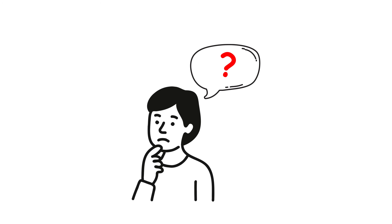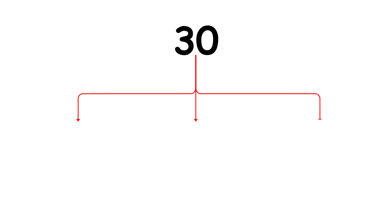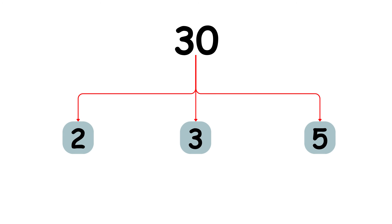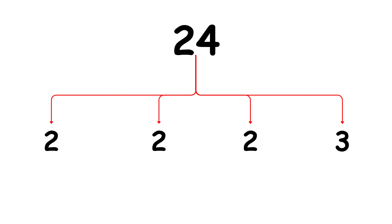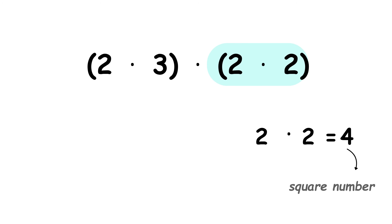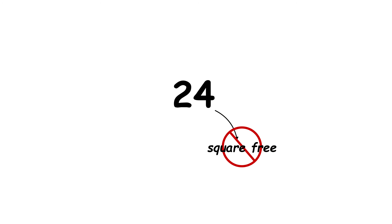Also, the number 1 is a factor of every whole number. Sometimes a whole number has no square number factors except the number 1. This is called a square-free number. For example, consider the number 30. We can quickly figure out whether this number is square-free by writing its prime factorization, which is 2 times 3 times 5. No prime factor appears more than once, so we can't form a square number with them — so 30 is square-free. As another example, take 24, which equals 2 times 2 times 2 times 3. We can rewrite this as 2 times 3 times 2 times 2. Now, 2 times 2, which is equal to 4, is a square number that is a factor of 24. So 24 is not square-free.